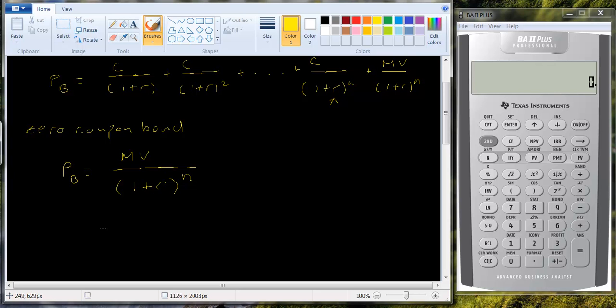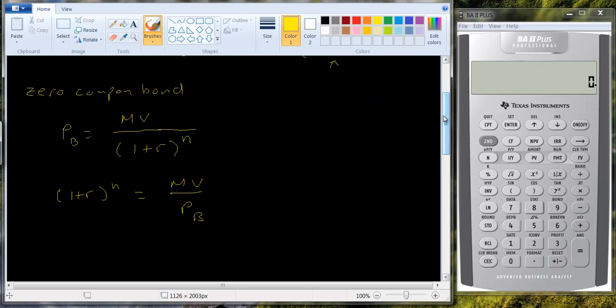So let me just work out the algebra here. Let's multiply both sides by 1 plus r to the n and divide both sides by pb. So I'm going to have 1 plus r raised to the nth power equals the maturity value divided by the price of the bond. And then we want to get rid of this exponent here, this power. And how do we do that? We raise this to the 1 over n power.